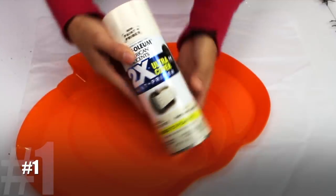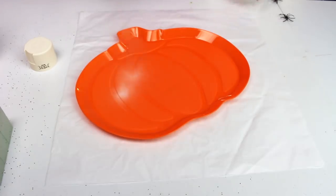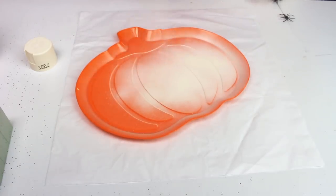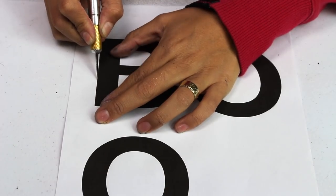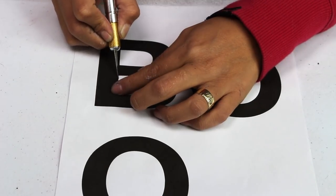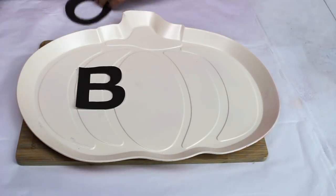For our first manual we are going to be using these charolas that you buy in the dollar store. We are going to paint them to give a different color and with some letters, or if you want to use black paint.